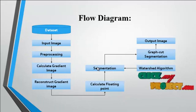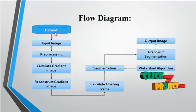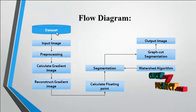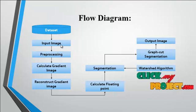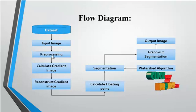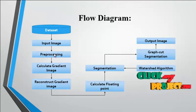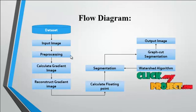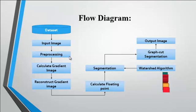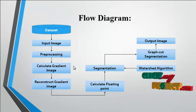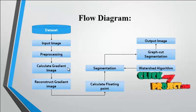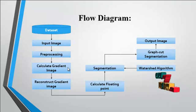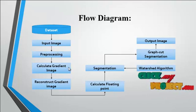Now we discuss about the flow diagram. First, the input image is taken from the dataset. After getting the input image, the preprocessing step is applied. In the preprocessing step, we filter the noise using the Gaussian filter — noise filtering is the removal of noise present in the dataset image. After noise filtering, the image is used for the calculation of the gradient image.